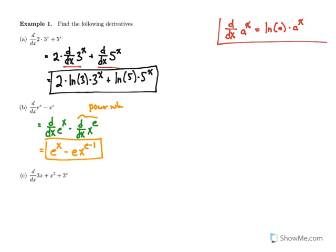Our last example on this page has three functions that look somewhat alike: 3x, x³, and 3^x, and all these are dealt with in slightly different ways. So we have the derivative of 3x plus the derivative of x³ plus the derivative of 3^x.